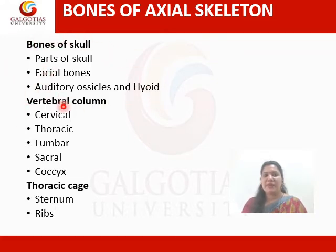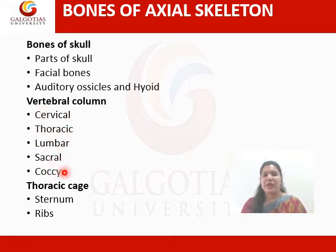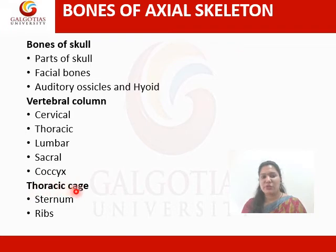The vertebral column includes cervical, thoracic, lumbar, sacral and coccyx regions, with bones in each of these particular areas. The third part is the thoracic cage which includes the sternum and the ribs.